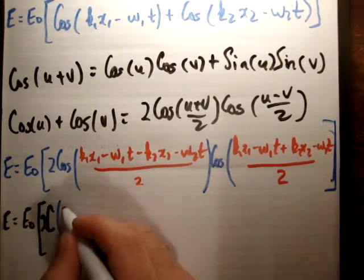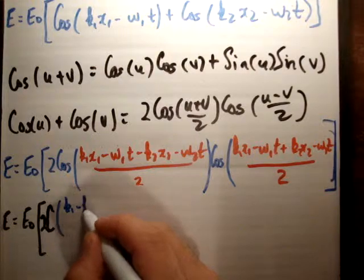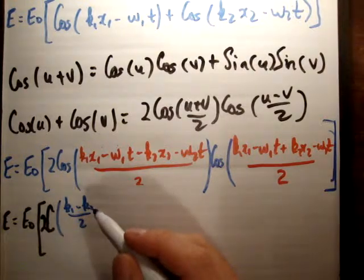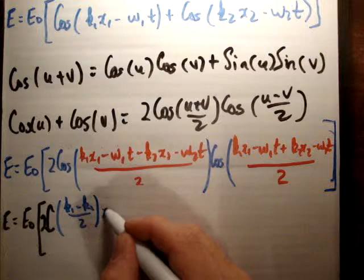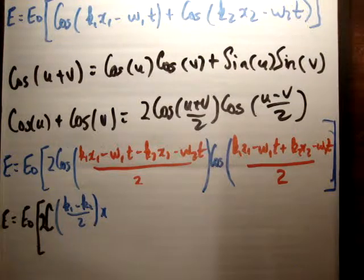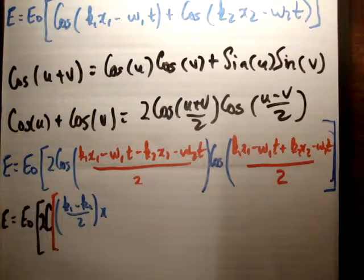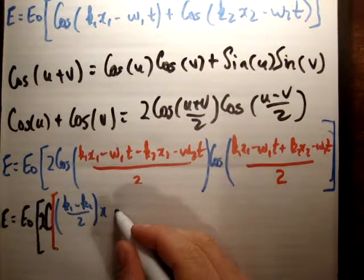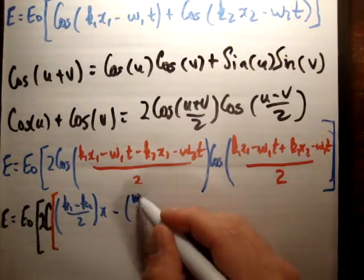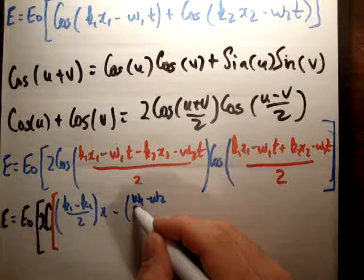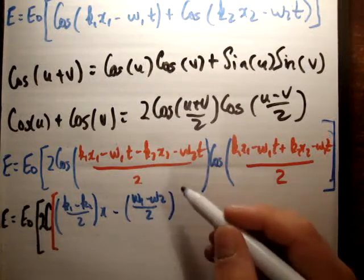It's going to be the cos of k1 minus k2 over 2 times x. And I need another bracket, which I should have put in at the start. The brackets are everywhere. You just need to be careful, that's all. Minus omega 1 minus omega 2 over 2 times t. Close off that bracket.